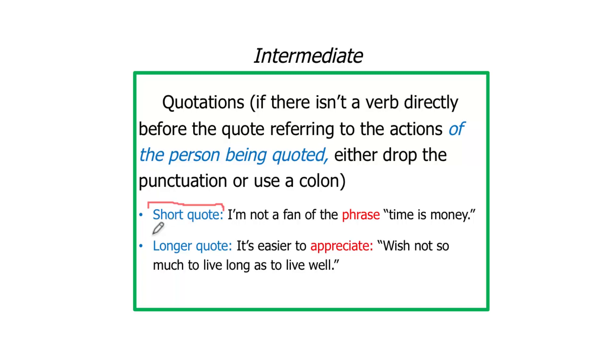Let's look at what happens if we have a slightly longer quote. By longer quote, there's no super clear cutoff, but usually about five words or more, you use a colon. Here's the same student thinking. It's easier to appreciate the quote, 'wish not so much to live long as to live well.' We don't have a comma here because appreciate is not the actual action that was being taken by Ben Franklin. And we do have a colon here because we have a longer quote. The chances that's going to come up on the ACT, probably maybe one in four. Some of the other things I've gone over are typically tested on every test. So this is sort of icing on the cake.